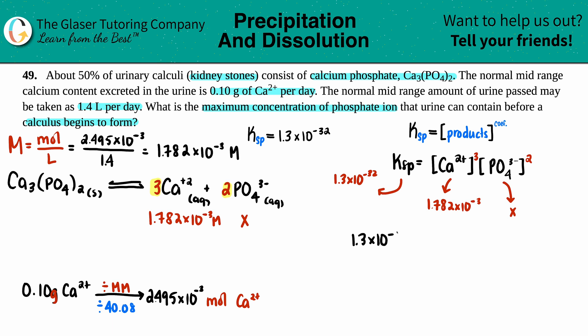1.3 times 10 to the negative 32 equals, so I have 1.782 times 10 to the negative third, and that's cubed, and then X squared. So it looks like I just have to do this value first, whatever that cubed is. So 1.782 times 10 to the negative third, we're going to cube that. So we get 1.3 times 10 to the negative 32 equals 5.6589 times 10 to the negative ninth, and that's X squared.